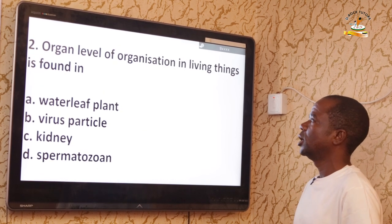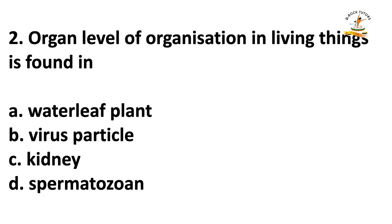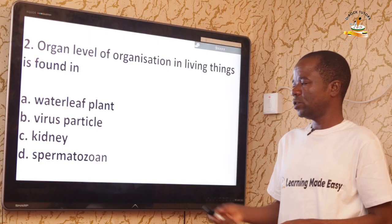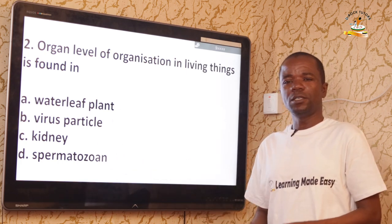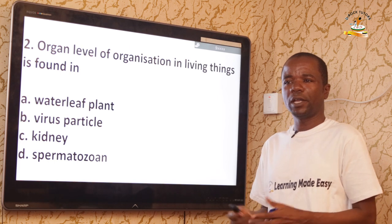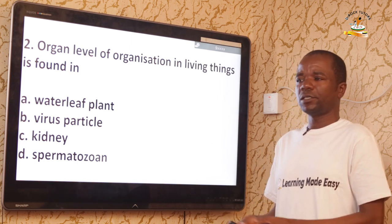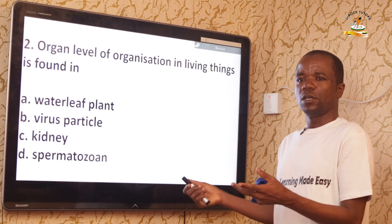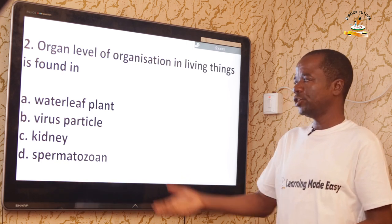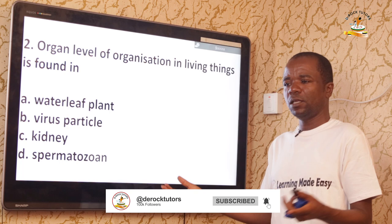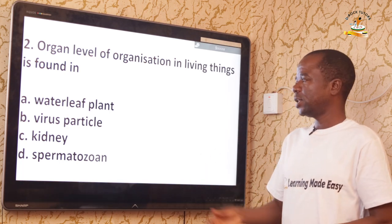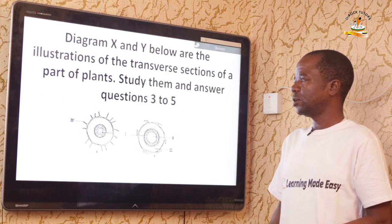Question two: Organ level of organization in living things is found in A — water leaf plant, B — virus particle, C — kidney, or D — spermatozoon. The correct answer is kidney. Kidney is an organ in higher animals — the organ saddled with the responsibility of osmoregulation. Other organs include liver and lung. So option C is the correct answer.